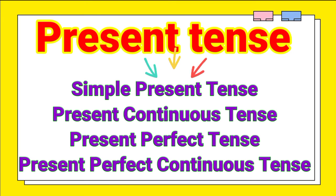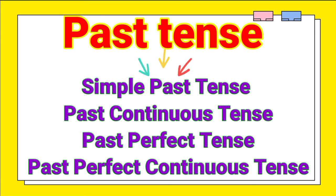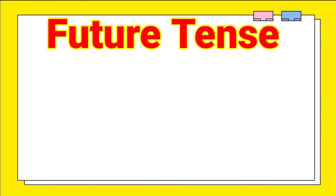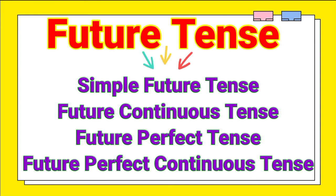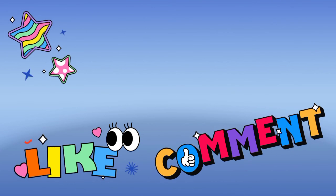Tense types — Present Tense: Simple Present Tense, Present Continuous Tense, Present Perfect Tense, Present Perfect Continuous Tense. Past Tense: Simple Past Tense, Past Continuous Tense, Past Perfect Tense, Past Perfect Continuous Tense. Future Tense: Simple Future Tense, Future Continuous Tense, Future Perfect Tense, Future Perfect Continuous Tense.